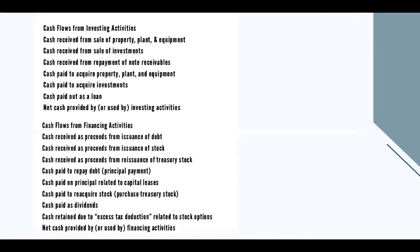For cash flows from investing activities, this would include cash received from sale of property, plant, and equipment; cash received from sale of investments; cash received from repayment of note receivables; cash paid to acquire property, plant, and equipment; cash paid to acquire investments; and cash paid out as a loan — to get the total cash provided by or used by investing activities.